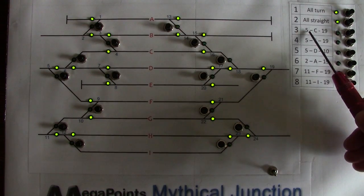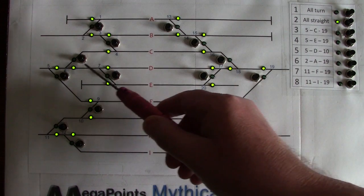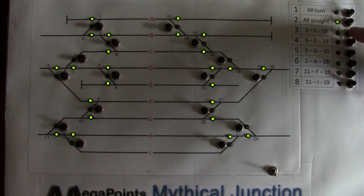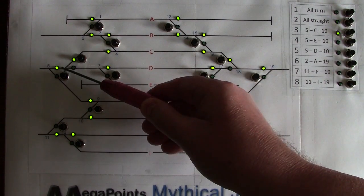a route, for example route number three, which is five via C to nineteen. So we start at five, we go up via C and come back out at nineteen and the route is selected. Everything is moved: five green to C, green across C, green down, another green and out at nineteen. So the route is selected.